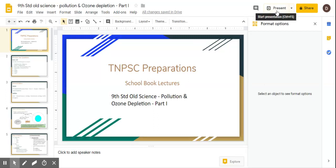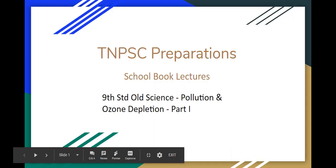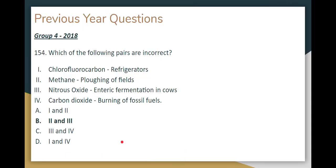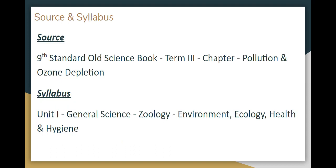Welcome to TNPC Preparations, School Book Lectures. In this video series, we will talk about the 9th Standard Old Science Book, Pollution and Ozone Depletion Chapter Part 1. We will also look at a previous question paper question: which of the following pairs are incorrect? So we will talk about 9th Standard Old Science Book, Term 3, Pollution and Ozone Depletion Chapter.